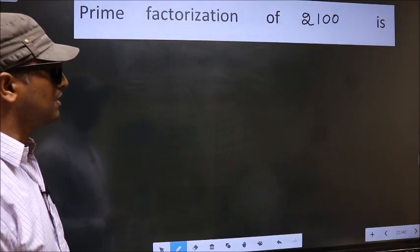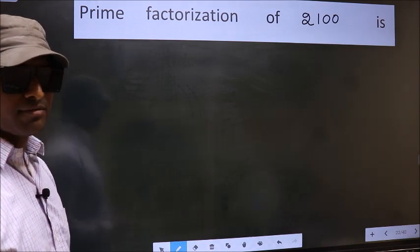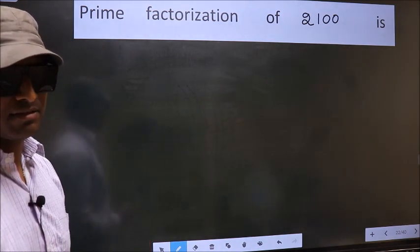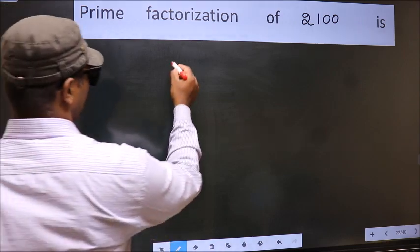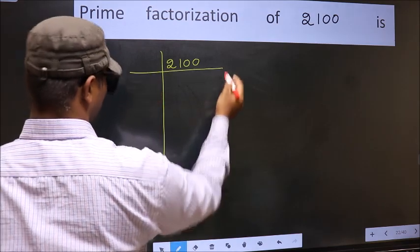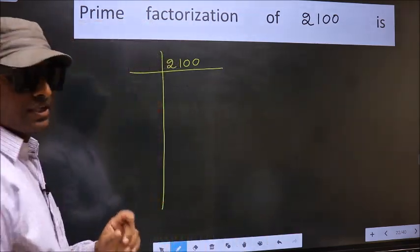Prime factorization of 2100. To do prime factorization, first we should frame it in this way: 2100. This is your step 1.